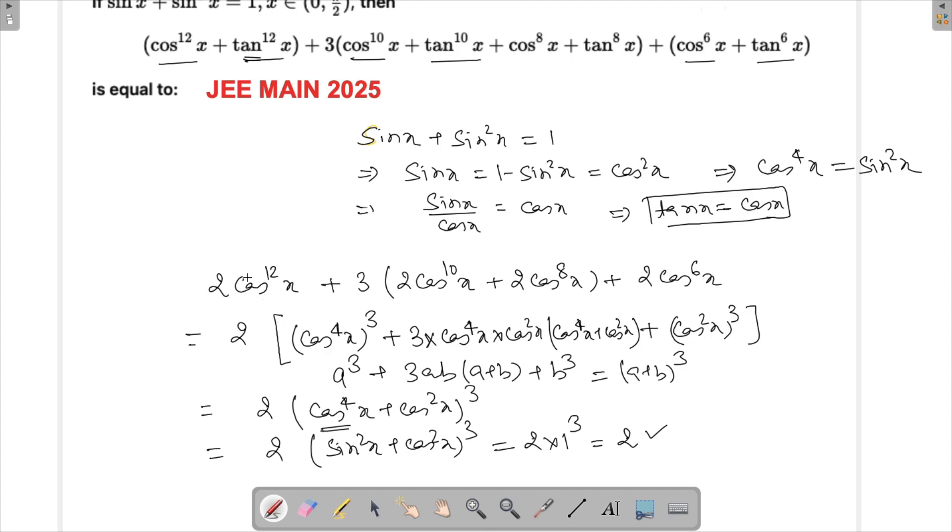Once we converted tan to cos, then it looked like in the beginning itself that it was gonna be a cube plus 3ab plus b square, but once we converted this, it turned out to be a cube plus 3ab a plus b plus b cube, which is a plus b whole cube.